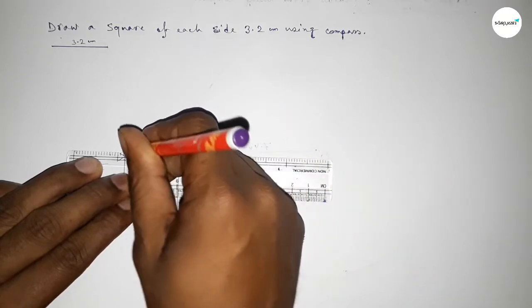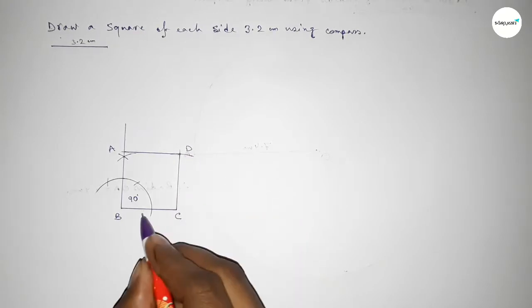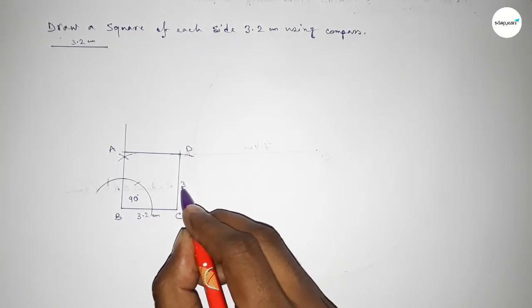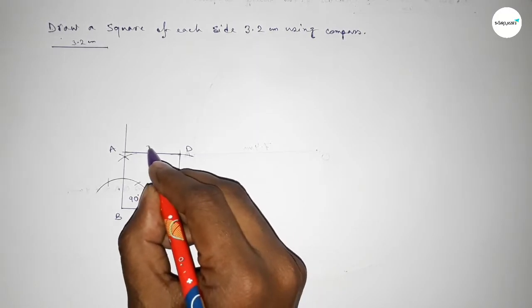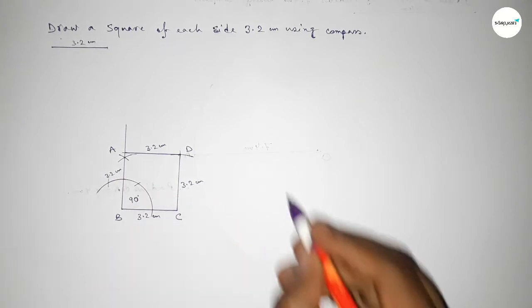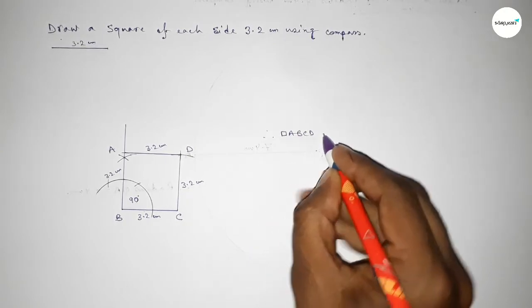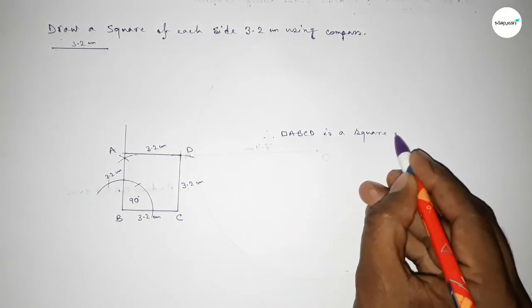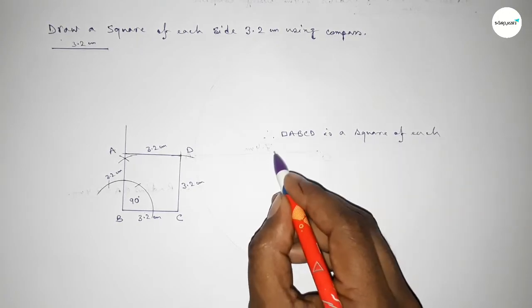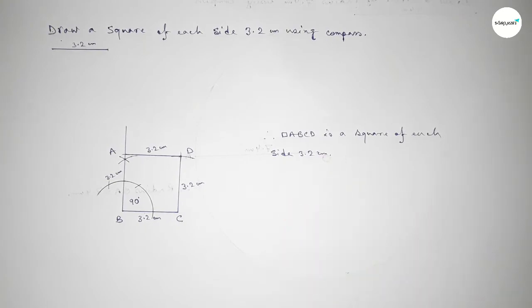Joining this side and taking here point A and here point D. This line is 3.2 centimeter, this line 3.2 centimeter, this line 3.2 centimeter, and this line also 3.2 centimeter. Therefore, square ABCD is a square with each side 3.2 centimeter. That's all — thanks for watching. If this video is helpful to you, please share it with your friends and like the video.